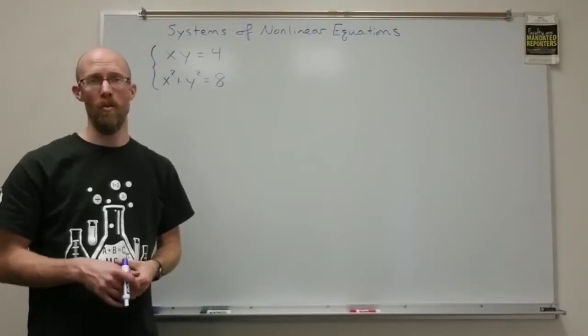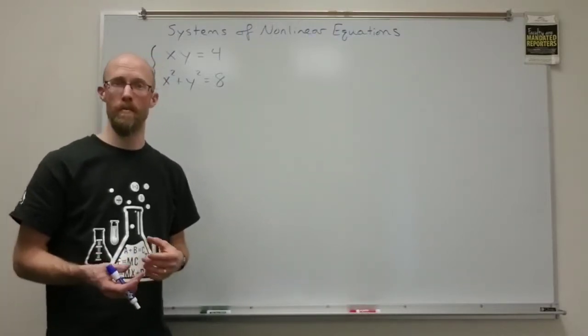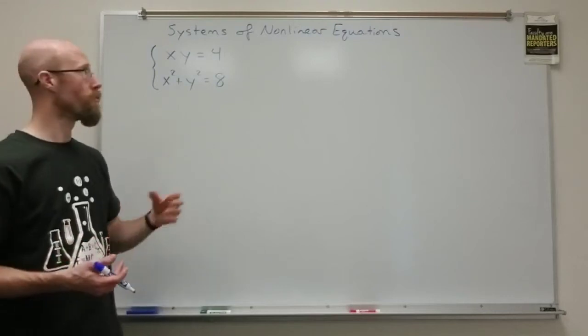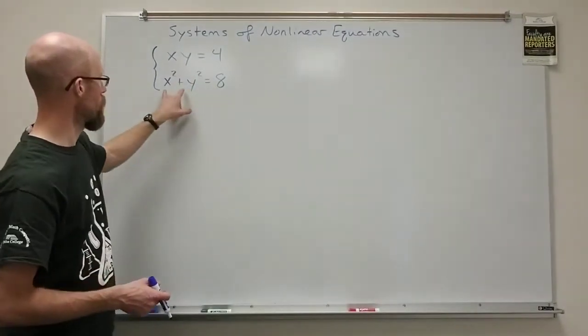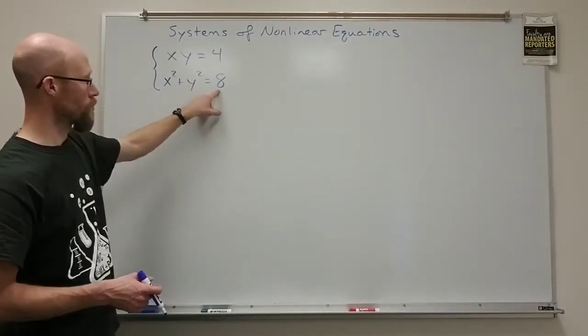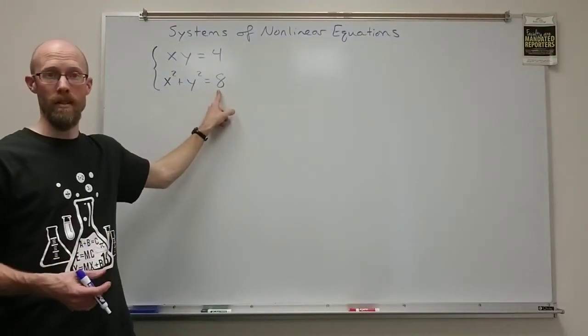That's not really something we've dealt with much in this class, but we can actually solve for y and get an idea of what the graph looks like. The second one is clearly a circle centered at the origin with a radius of square root of 8, or 2 root 2.